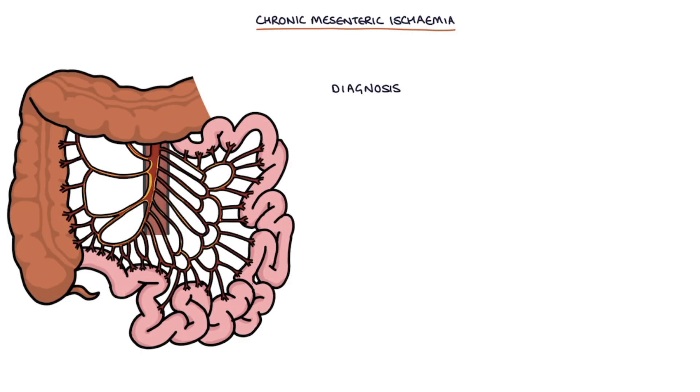A diagnosis of chronic mesenteric ischemia is made using a CT angiogram which is where an intravenous contrast is injected which highlights the blood vessels to detect any abnormalities or narrowing.